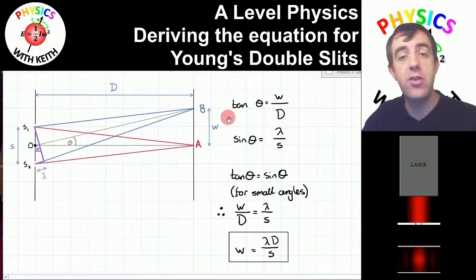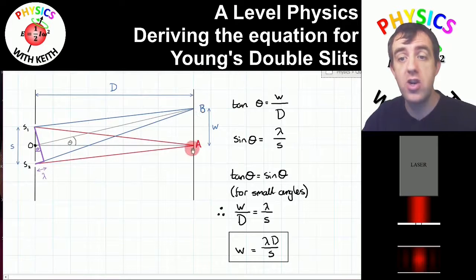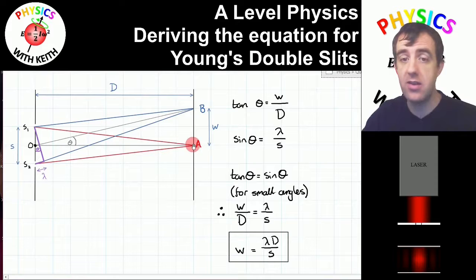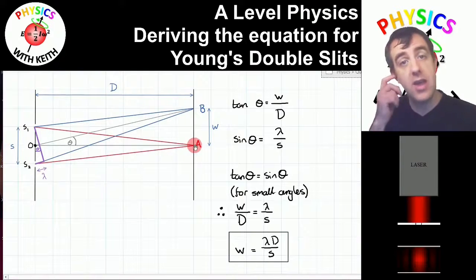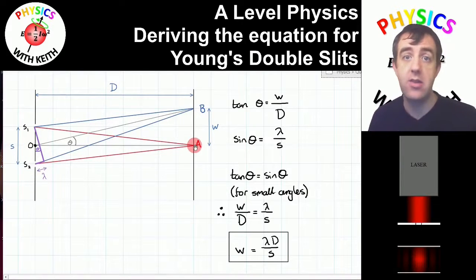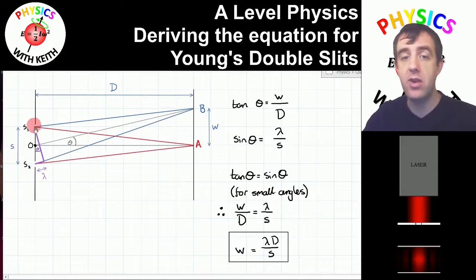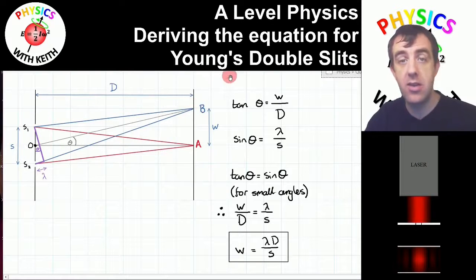What we're going to do is visualise a picture where we're looking at two adjacent fringes: fringe a, which is right in the centre, and fringe b. The light from the two slits, slit 1 and slit 2, arrives at point a in phase — that's why it forms a bright fringe. And the light from slit 1 and slit 2 also arrives at point b in phase, which is why there's a bright fringe there as well.